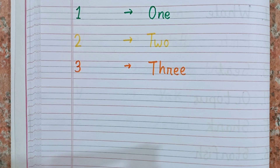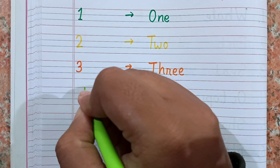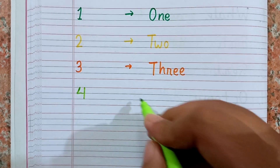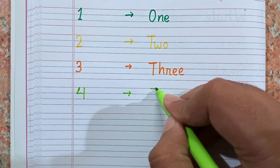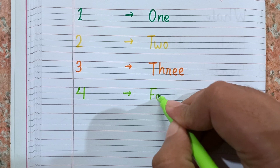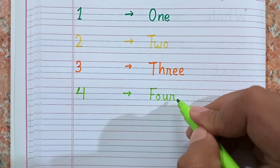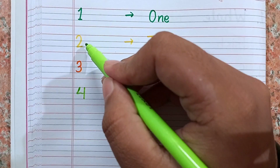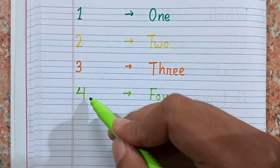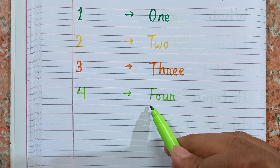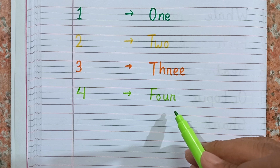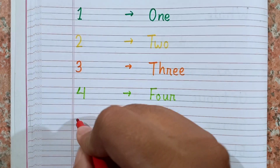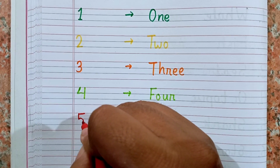Now I am writing 4. This is 4, and the spelling of 4 is F-O-U-R. Again, count with me, kids: 1, 2, 3, 4, and the spelling of 4 is F-O-U-R. After 4 I am going to write 5.